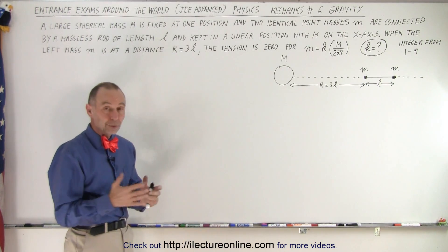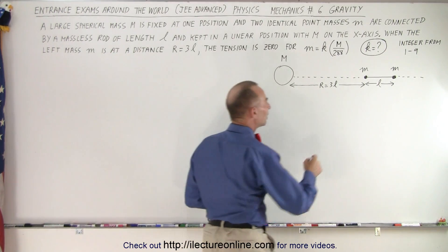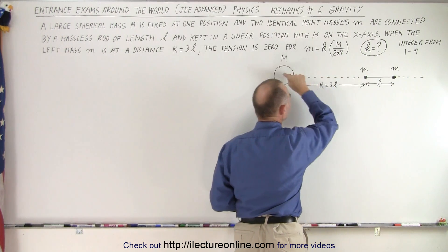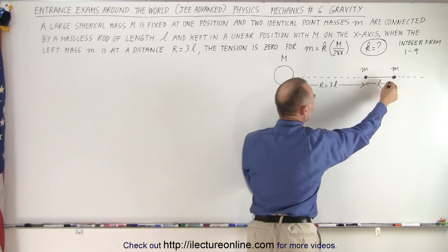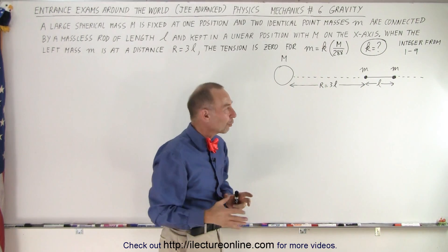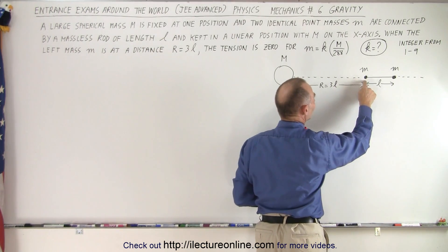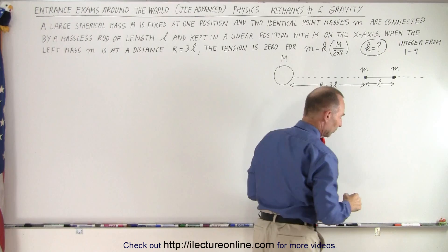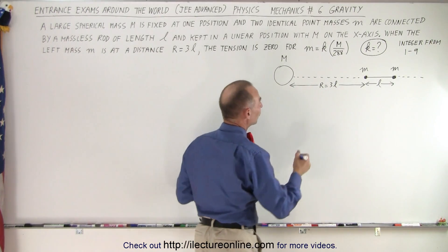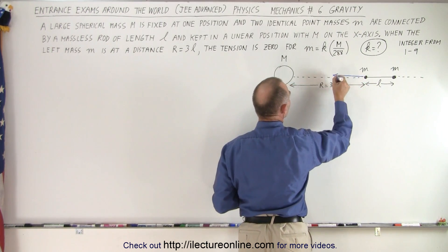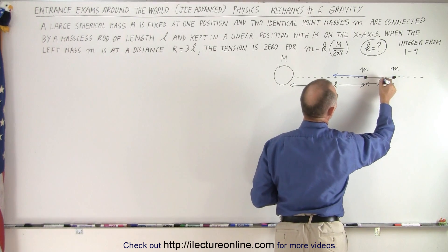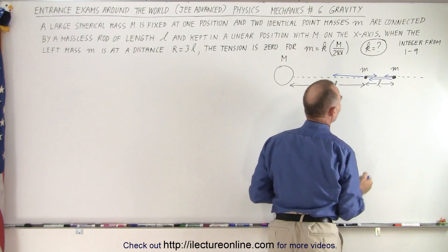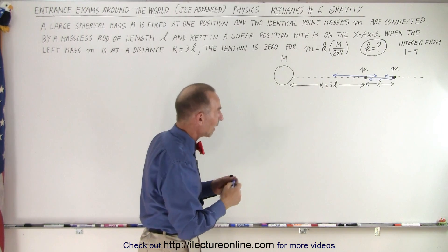You might think, how in the world do I start on this? But you have to realize that the attraction due to gravity between the closer mass and the large mass is greater than the force of attraction between the farther-away mass and this mass. That means the force on the closer mass would be greater, so there would be tension on the rod. That tension may be negated by the fact that each small mass is attracted to the other — so there's a total of four gravitational forces acting between the three masses.